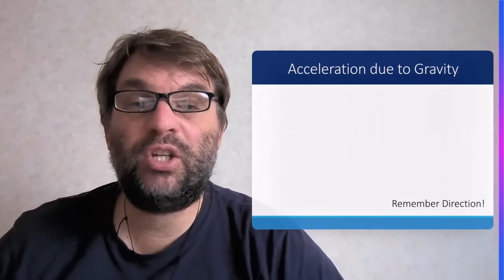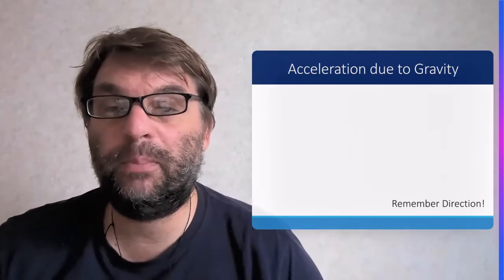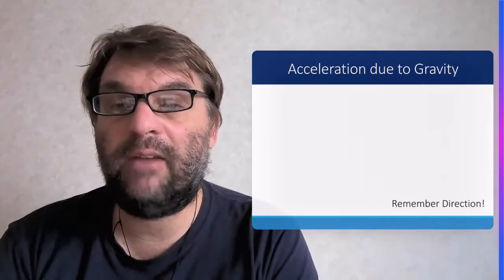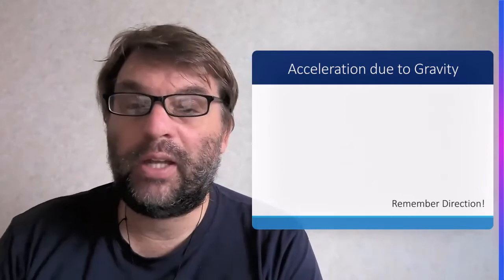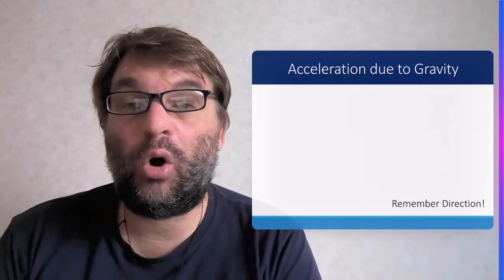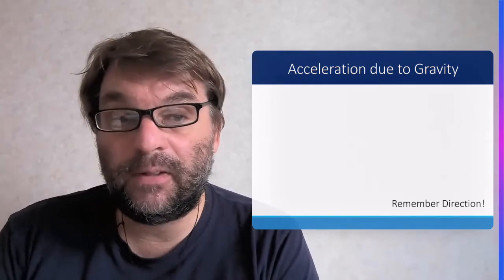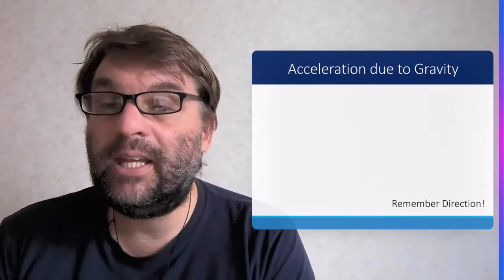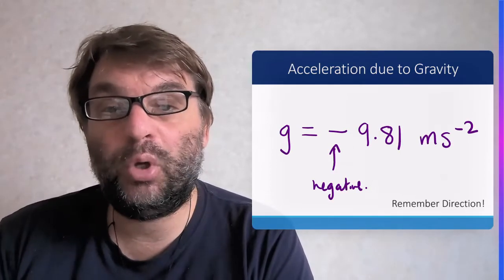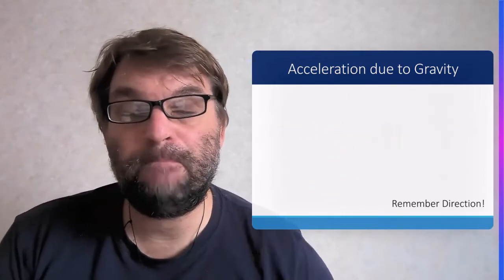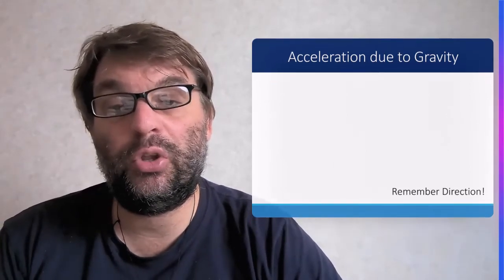So acceleration due to gravity. On Earth, the acceleration, of course being a vector, is going to have a magnitude, a size, and a direction. So in terms of objects that are dropping, that is going to be negative, so remember the direction, negative 9.81 meters per second per second. That's going to be the acceleration due to gravity, at least on Earth.